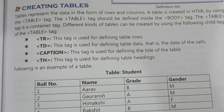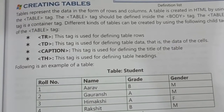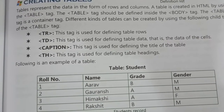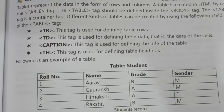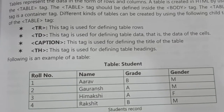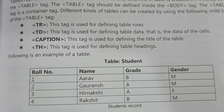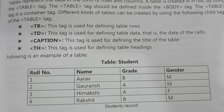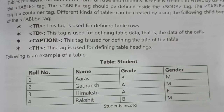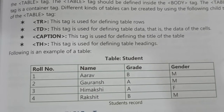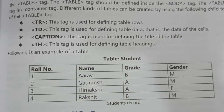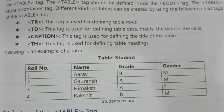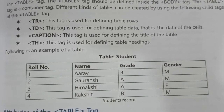TR tag is used for defining table rows. For example, the first row containing role number, name, grade, and gender is created using the TR tag. The next one is TD — TD stands for Table Data. This tag is used for defining table data, that is, the data inside the cells.